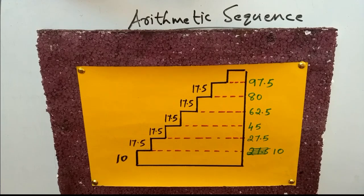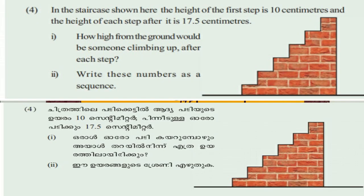In the staircase shown here, the height of the first step is 10 centimetres and the height of each step after it is 17.5 centimetres. How high from the ground would be someone climbing up after each step? Write these numbers as a sequence. This is very simple.